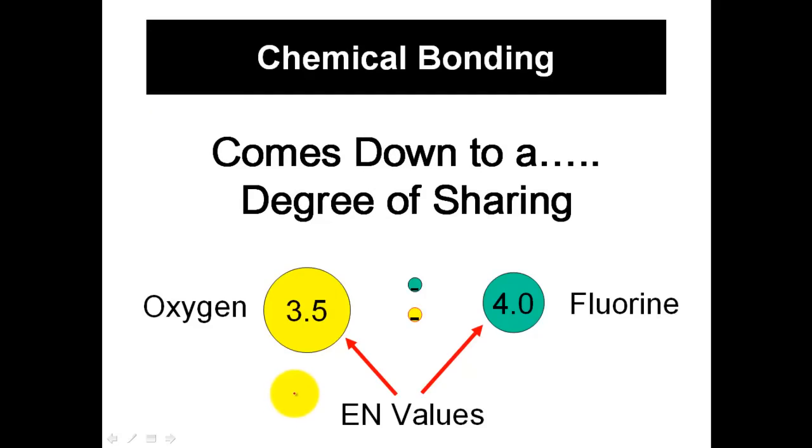So I want you to think of chemical bonding as kind of a degree of sharing. The thing that's trying to be shared, these electrons right there. We were talking about getting an octet rule and having electrons in an outer shell, that's great. But the real question really comes down to, what is the degree that those electrons are being shared?